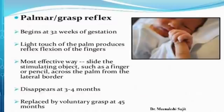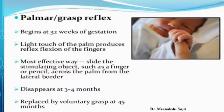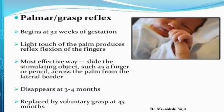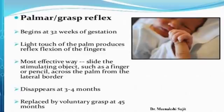Next is the palmar grasp reflex. It begins at 32 weeks of gestation. A light touch of the palm produces reflex flexion of the fingers — if you place a finger in the baby's hand, automatically the fingers flex and hold your finger. This is the grasping reflex. It disappears between 3 to 4 months and is replaced by voluntary grasp at around 4 to 5 months, when the baby can grasp by itself voluntarily.